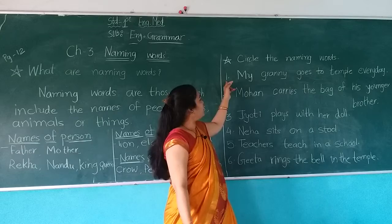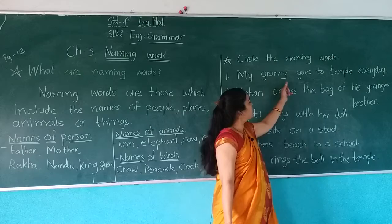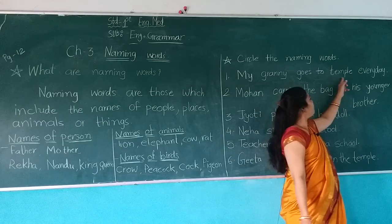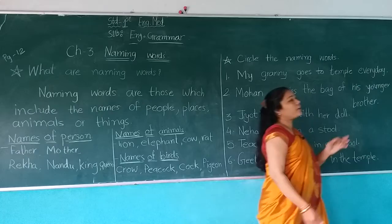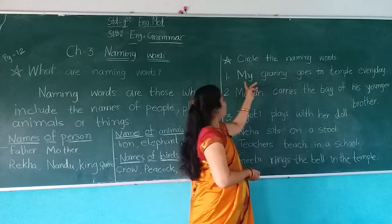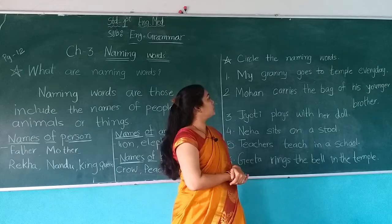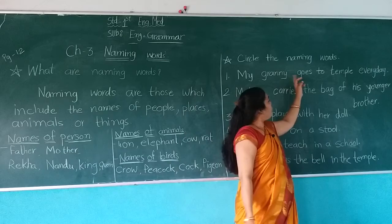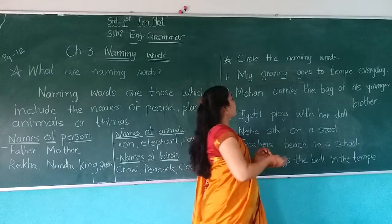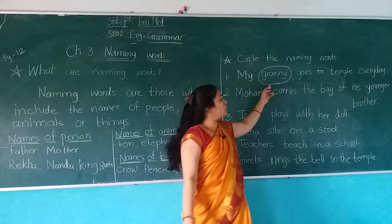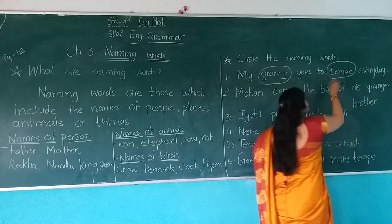Number 1: My granny goes to temple every day. Now which are the naming words? Two naming words are given here. Granny — G-R-A-N-N-Y — granny means grandmother, and it is a name of a person. Temple — T-E-M-P-L-E — temple is a name of a place. So do a circle on granny and do a circle on temple.